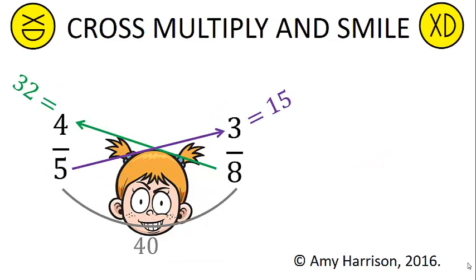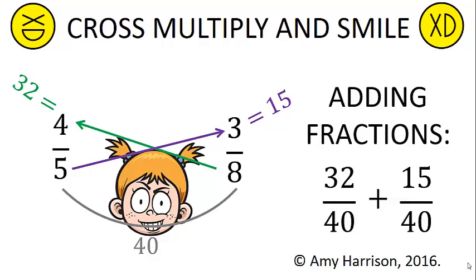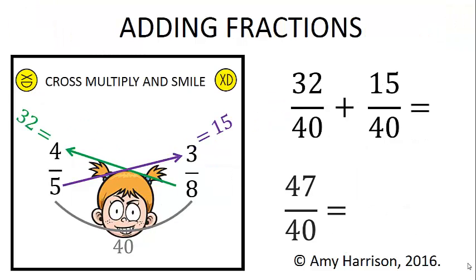We can also use cross multiply and smile for adding fractions. In this example, we would just add the numerators 32 and 15, that would give us 47.